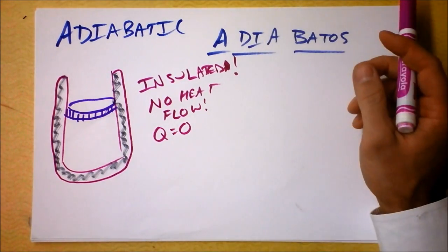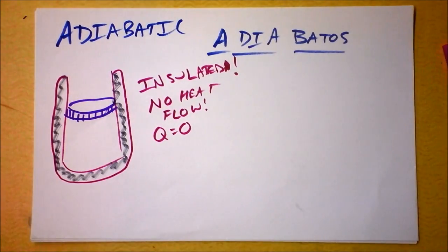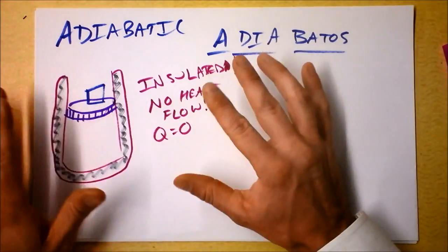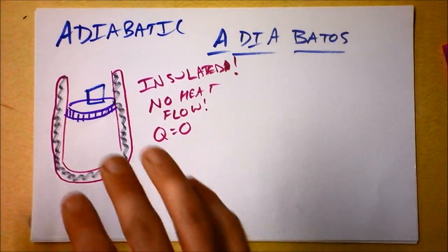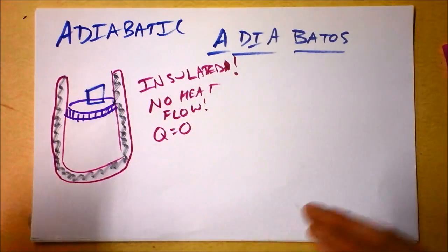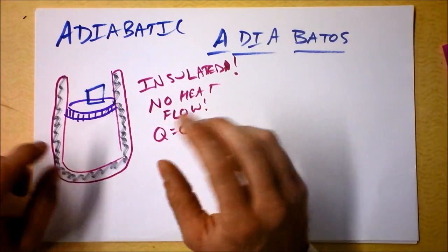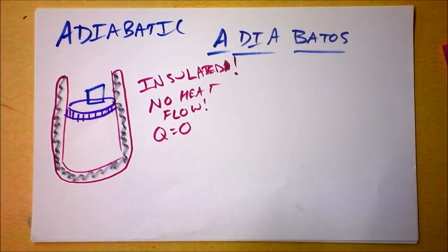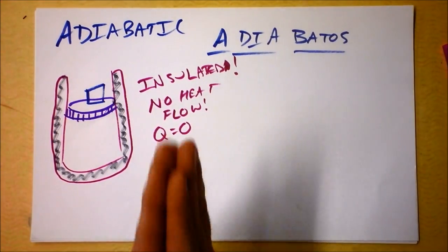Either we do stuff to this gas - we could put a mass on it, very similar to as we've had before. We could do stuff to it, but the key is the system is as the system is and we're not going to have any heat going in and we're not going to have any heat coming out. That's what adiabatic means: insulated from its surroundings.